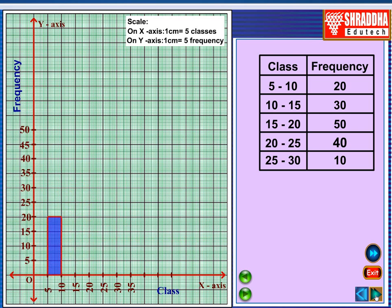Draw 5 to 10 with Frequency 20. First bar. Second, 10 to 15, Frequency will be 30. 15 to 20, Frequency will be 50.